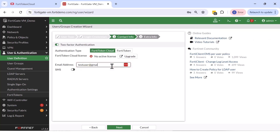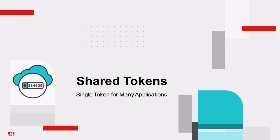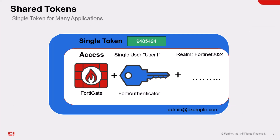Now let's dive into the details of the notable features within FortiToken Cloud. One of the cool features is shared token across different applications — you can use the same token for one end user across different applications. An end user can be identified by the same username on different applications within the same realm, or by the same email address across different applications. For instance, if you have a user named user1 on FortiGate and create a matching user1 on FortiAuthenticator, user1 on FortiAuthenticator can use the same token as user1 on FortiGate without needing a new token, provided both applications are within the same realm on FortiToken Cloud.